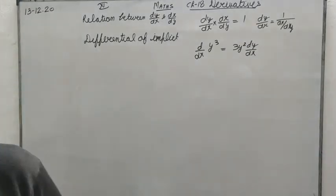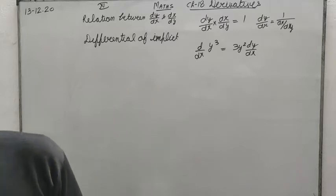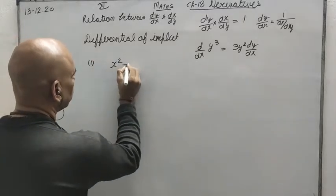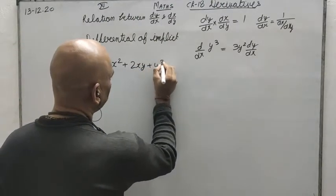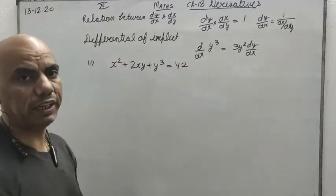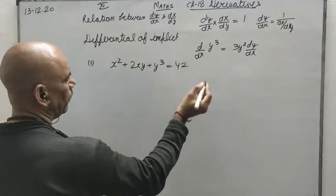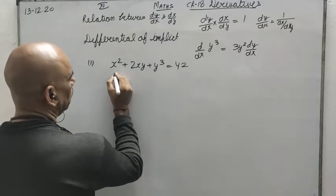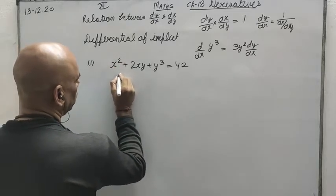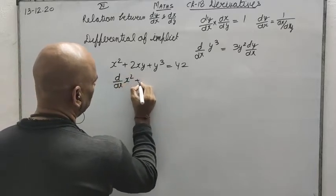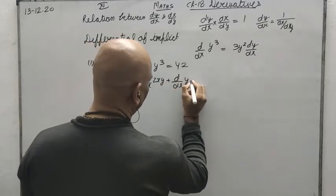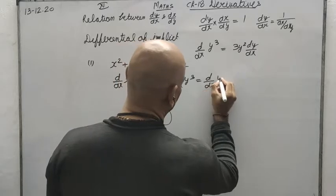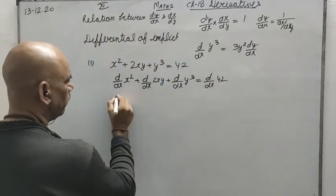He will ask: find dy by dx. The question is x squared plus 2xy plus y cubed equals 42, and he is saying find dy by dx. So for that purpose, we will find the differential of it with respect to x: d over dx of x squared, d over dx of 2xy, d over dx of y cubed, and d over dx of 42. The differential of x squared will become 2x.